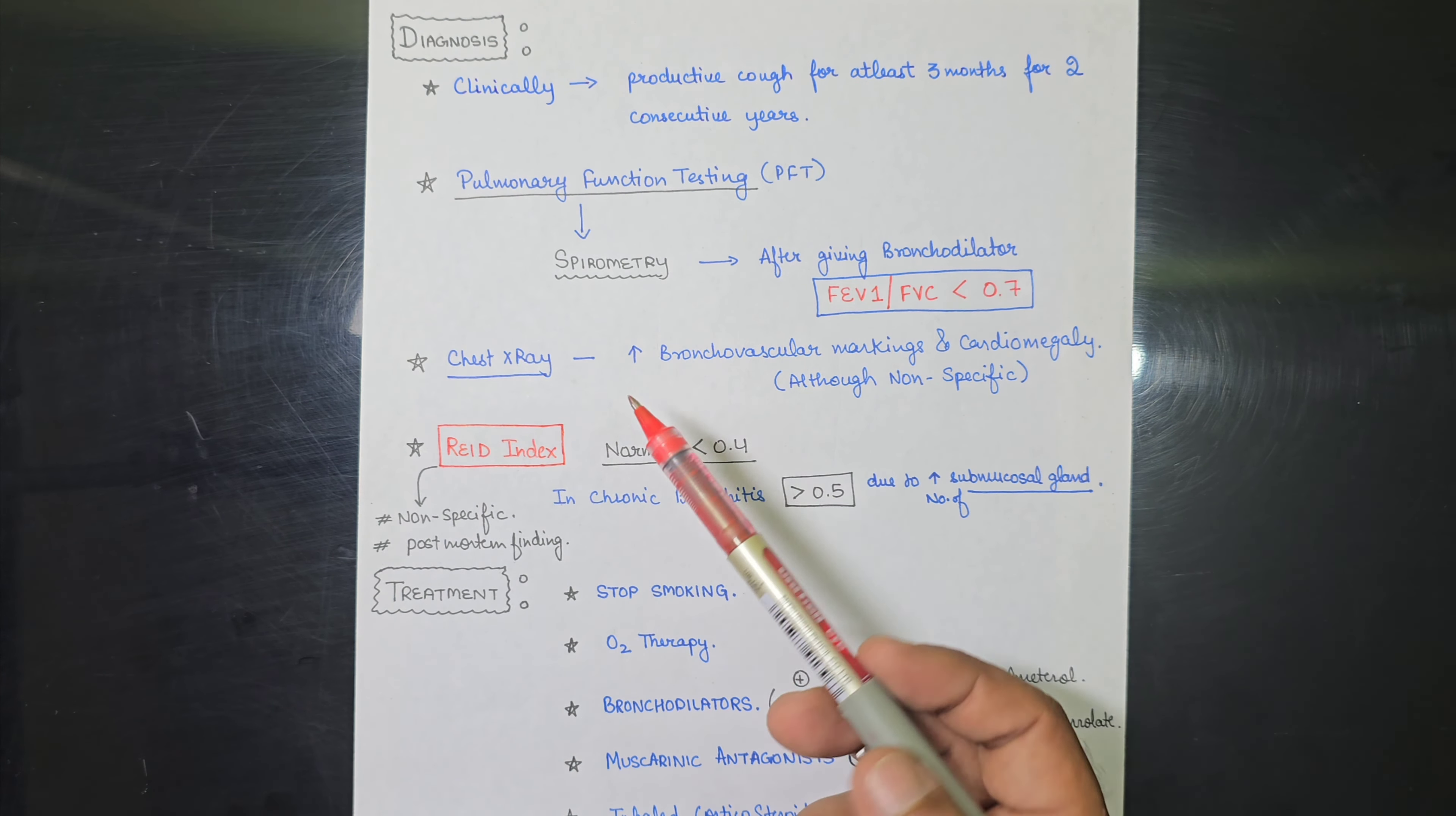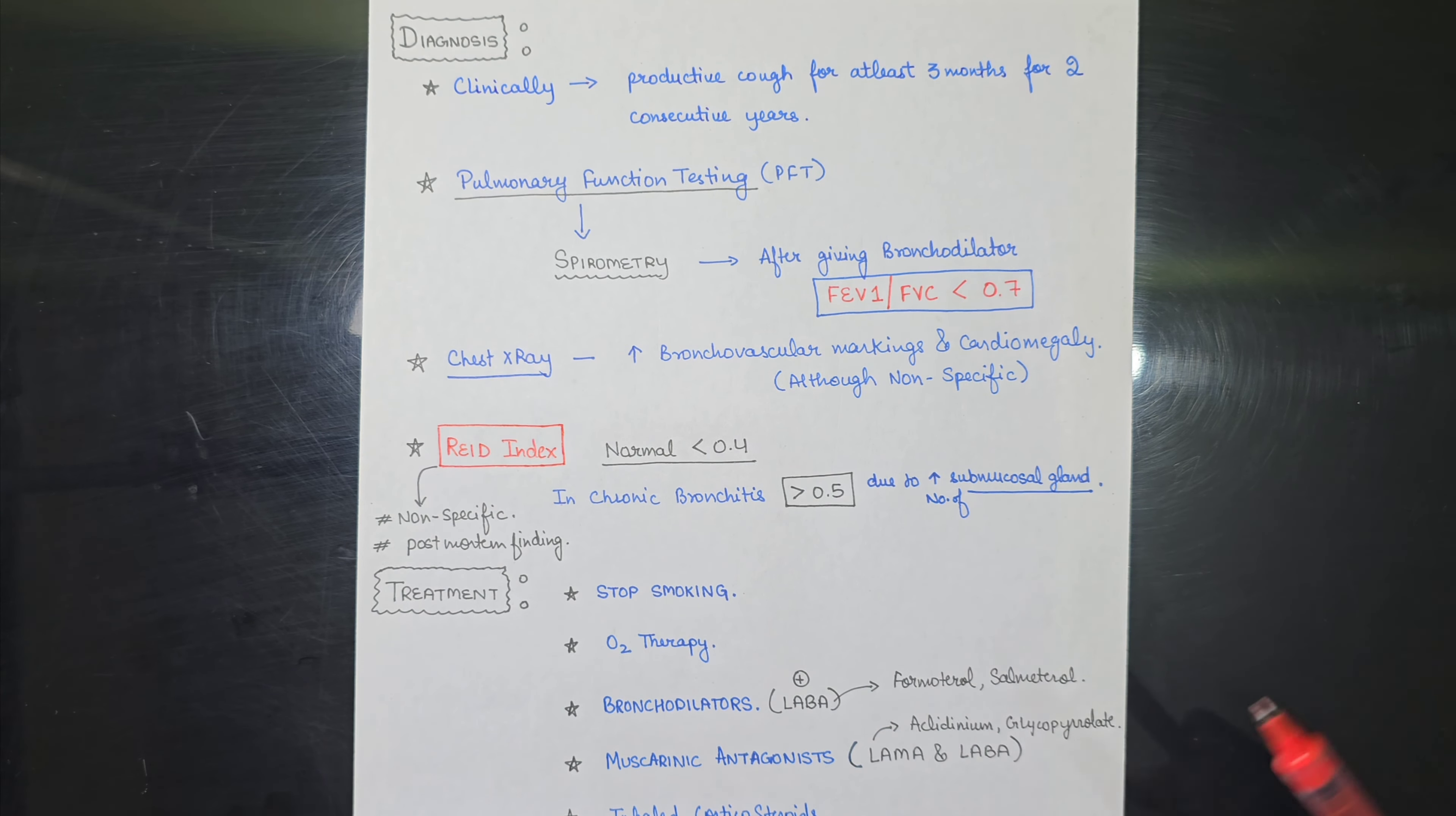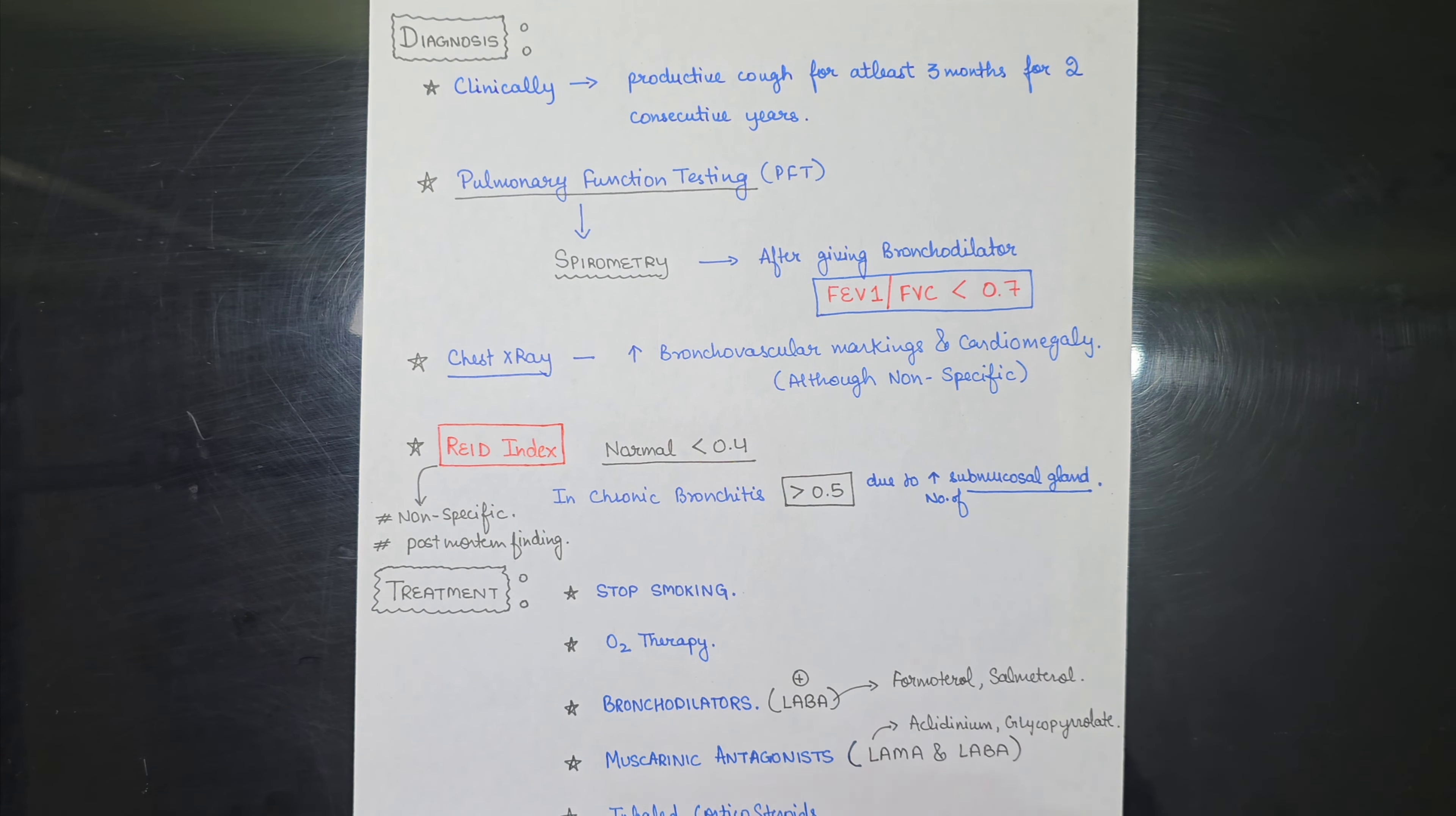After that, chest x-rays can also be done in which we can see increased bronchovascular markings and cardiomegaly, but it is basically non-specific because these markings and cardiomegaly are only seen in the later stages of the disease. There is another important index from examination point of view. It is Reid index. And Reid index is also non-specific and it is usually a post-mortem finding.